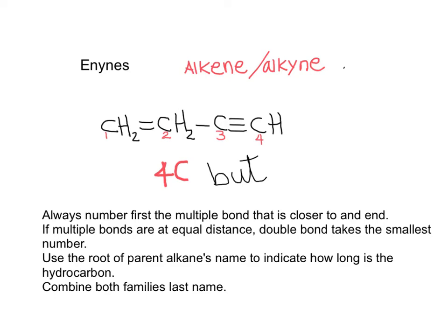Enynes are unsaturated compounds that contain both a carbon-carbon double bond and a carbon-carbon triple bond. We always need to look for what is the longest hydrocarbon chain and state what is the position of the multiple bonds.